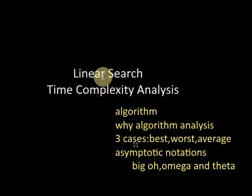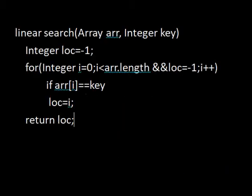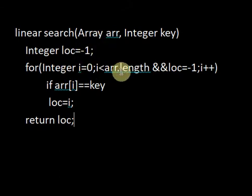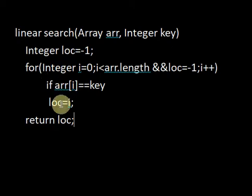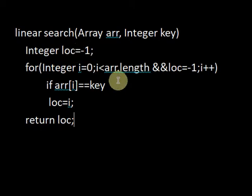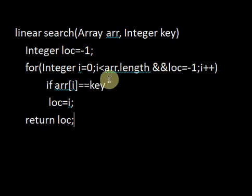We'll use an example of linear search. Here is one algorithm for linear search. In linear search, to search for an element in a particular array we iterate from the beginning to the end of the array and compare each element with the element being searched. If the element is found, we update the location, which we had initialized as minus one before. Each iteration we check whether the end of the array is reached or whether the location is updated, and either case we exit the for loop and return the location.